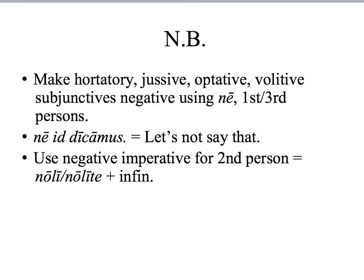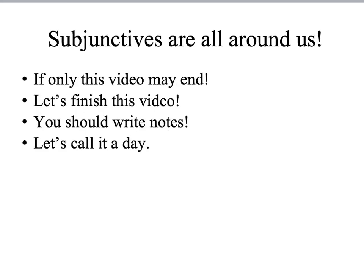Nota bene: you can make all of these subjunctives negative by using the negative word ne, especially with the first and third persons. Ne dicamus — let's not say that. We can still use the negative imperative for the second person, indicating don't do something. Subjunctive mood is all around us — every time you begin a statement with 'if only,' you're saying a wish. When you use the word 'let's,' you're expressing encouragement, or a hortatory subjunctive. 'You should write notes in your notebook' is a volative subjunctive. Let's call it a day — a second hortatory subjunctive.